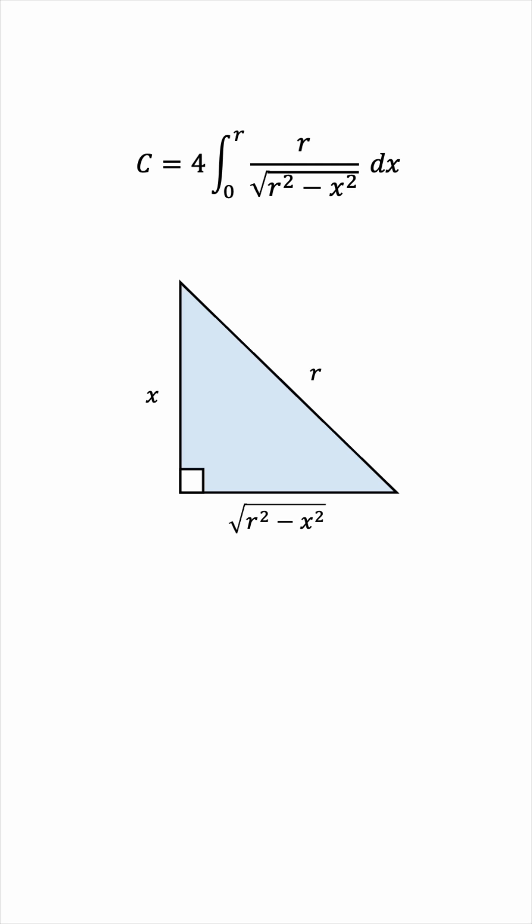If we introduce this angle theta, then sine theta will be x over r, and cosine theta will be the square root over r.